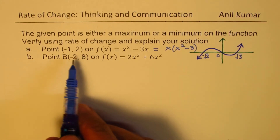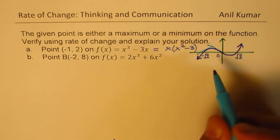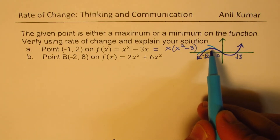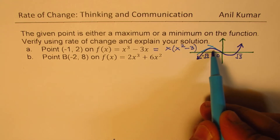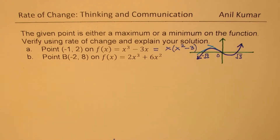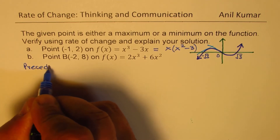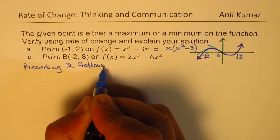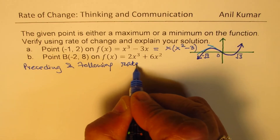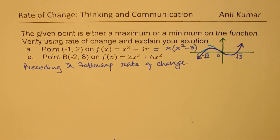If the slope changes from negative to positive, we expect a minimum. From the rate of change, we can determine whether we have a maximum, minimum, or neither — the slope m must be zero in both cases. We will analyze the preceding and following rate of change to justify whether it is a local maximum or minimum.